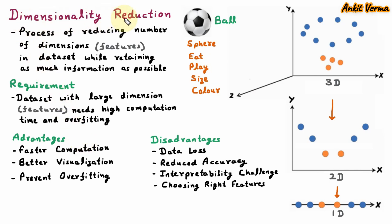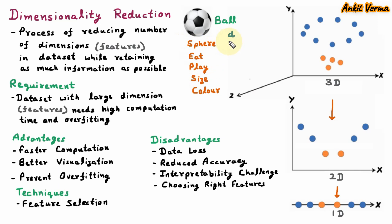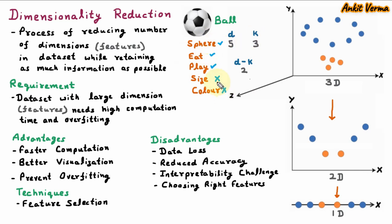There are two techniques of dimensionality reduction. The first is feature selection. In feature selection, we choose the most important features from the dataset without altering them. Let us suppose D means the total number of features — here there are five features: one, two, three, four, and five. Out of the total features, we are taking K, which means the most important features. Let us suppose the first three features are most important. So we have selected three most important features out of five, and the remaining two features are discarded. So in feature selection, out of the total number of features, we select the most important features and the remaining features are discarded.